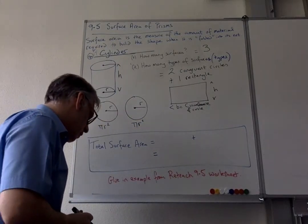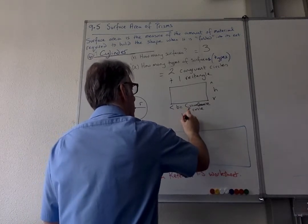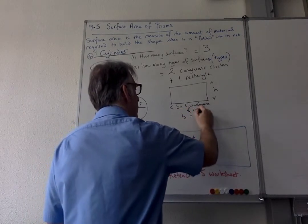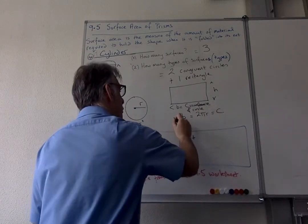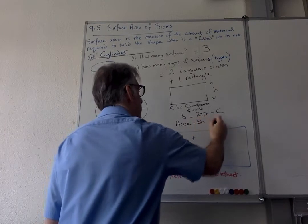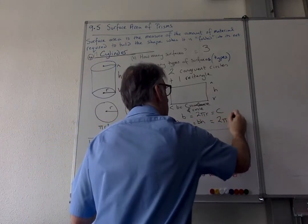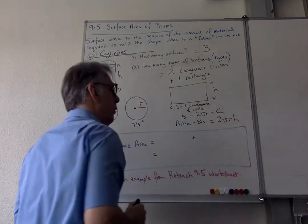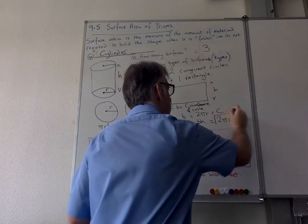So B, we know if the circumference of the circle is equal to 2πR, which is equal to C. So then if I want the area, which is B times H, we know that B is 2πR and we know H is that one. So that is the formula.